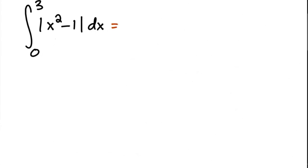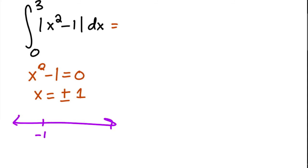To find this integral we need to figure out where x squared minus one is positive and negative. Finding the zeros first: x squared minus one equals zero at x equals plus and minus one. Since it's a quadratic, we do a number line. Plugging in zero gives a negative number; plugging in two gives positive; plugging in negative two gives positive. So x squared minus one is positive for x less than negative one and x greater than one, and negative between negative one and one.